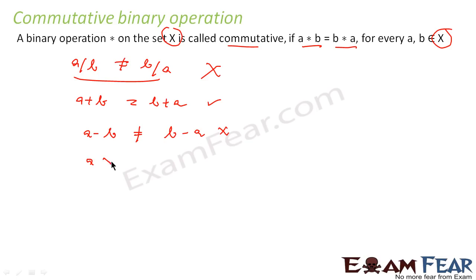Similarly, multiplication operation if you see is commutative. So there are many operations - some operations are commutative, some operations are not commutative. The only thing is for commutative, a star b should be equal to b star a.